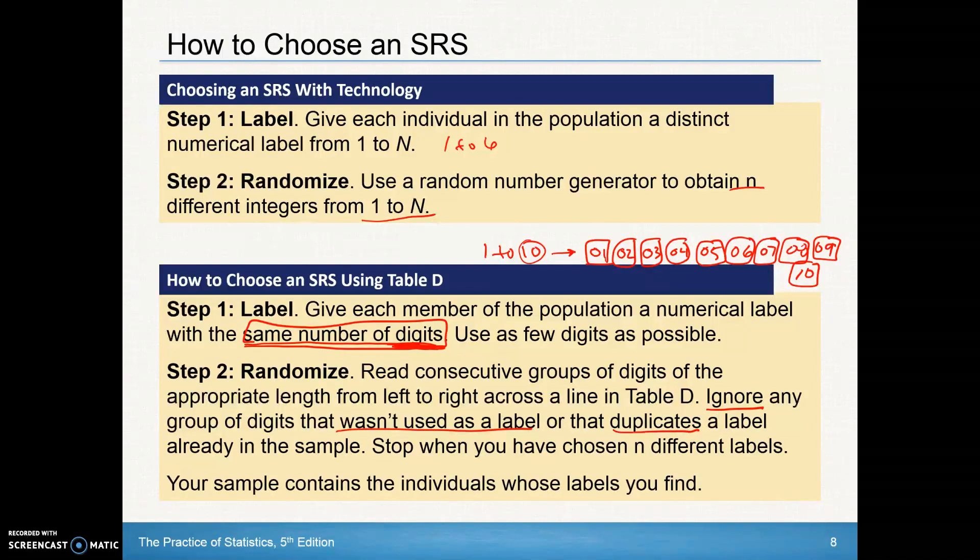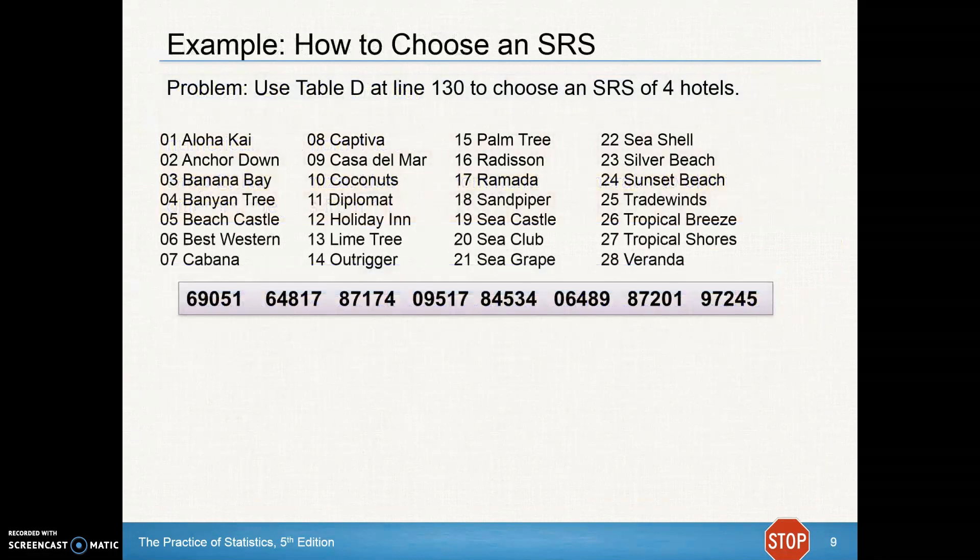All right, let's take a look. So we want to use table D, and we're going to use line 130 to choose an SRS of four different hotels. So what we've done is each of the different hotels have been assigned a two-digit number because there are a total of 28 different hotels in here. Each one's going to have two digits for their hotel.